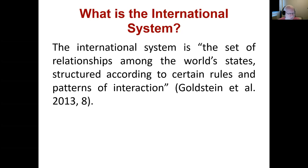So what is the international system? The international system is a set of relationships among the world's states, structured according to certain rules and patterns of interactions. Some would say it goes beyond world states to other international actors as well. These aren't just random relationships — there are certain rules and patterns of interactions that exist, and those rules and patterns of interaction together make up the international system. So we don't just have states existing in nothingness.